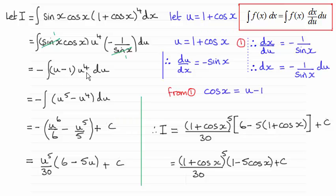OK, so then it's just a question of expanding the brackets, giving us this, integrating each of the two terms, which gives us this. And then I've pulled out u to the 5 as a common factor, and put it over a lowest common multiple of 6 and 5, which is 30.